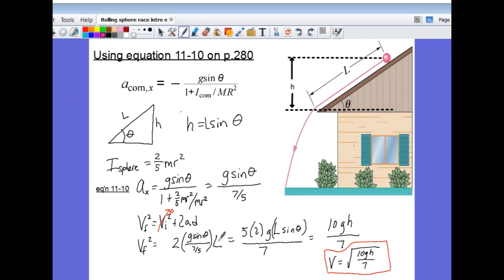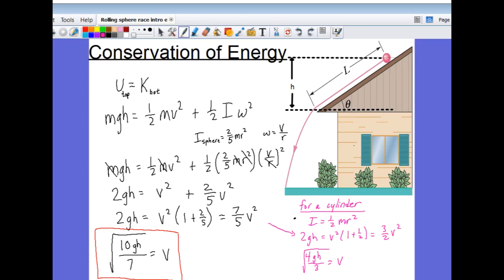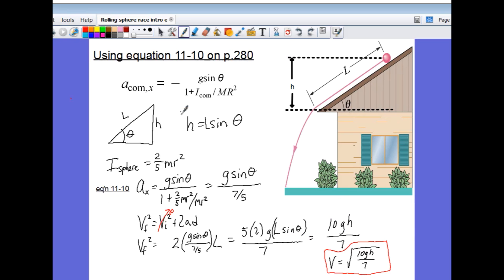So down here, this l times sine theta, I replace it with h. And lo and behold, I see I get the same expression for the velocity that I did using conservation of energy, the square root of 10 gh over 7. And using this equation and this method, I get the same answer. Here we go.